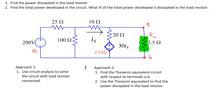In this video we will discuss the advantages and limitations of the Thevenin equivalent circuit technique. Consider this circuit of interest. This circuit has one independent voltage source and one dependent source, and this dependent source is a current controlled voltage source.